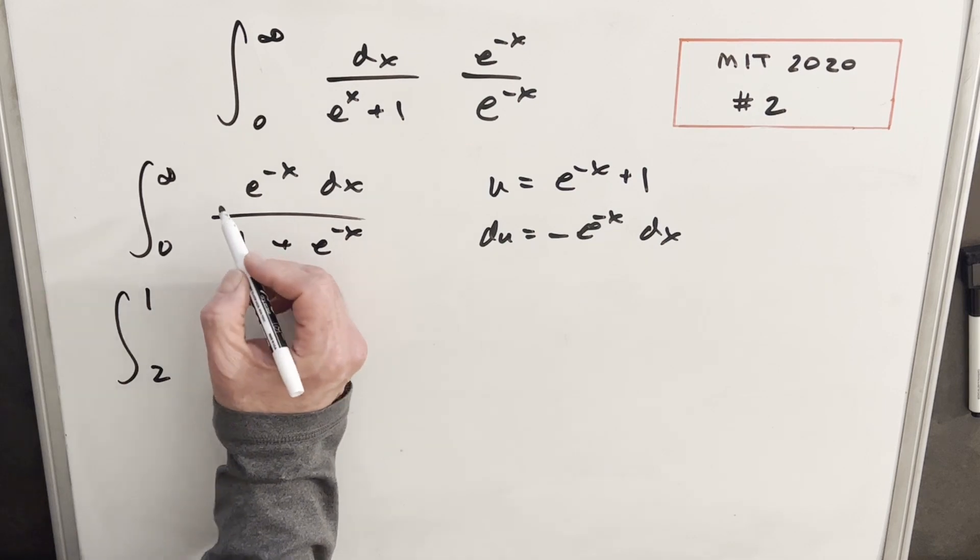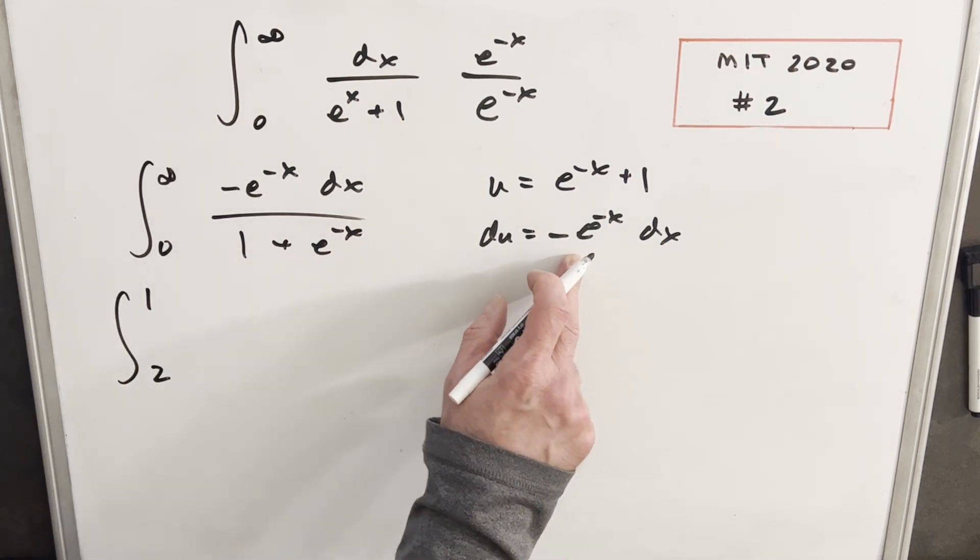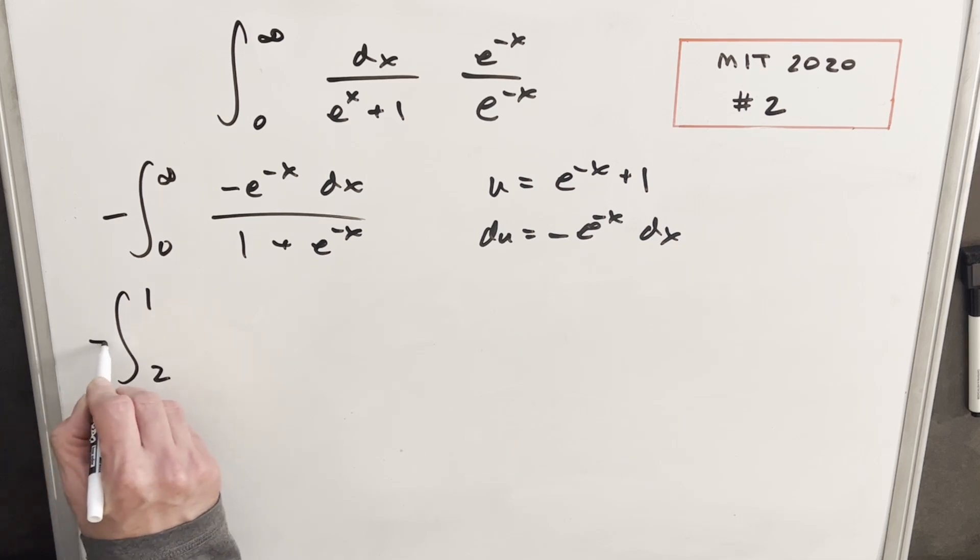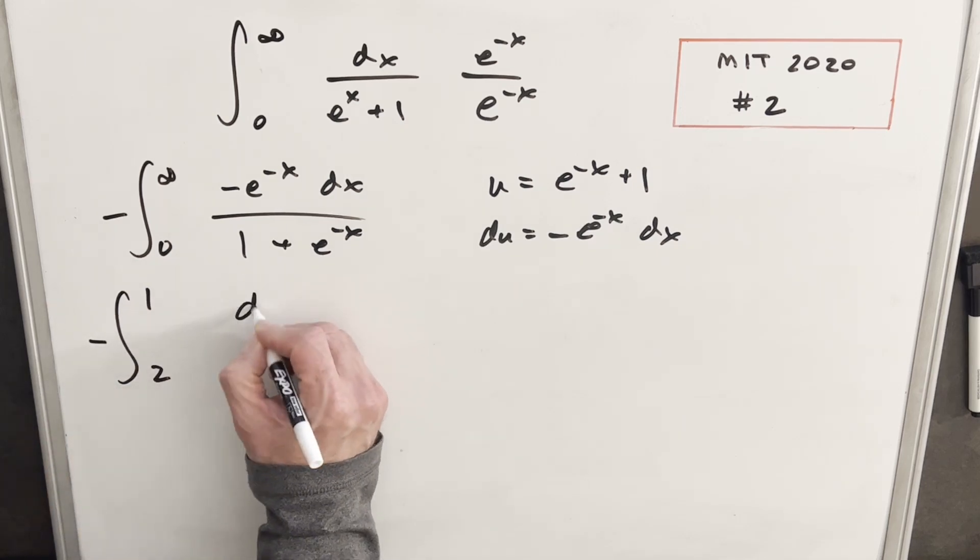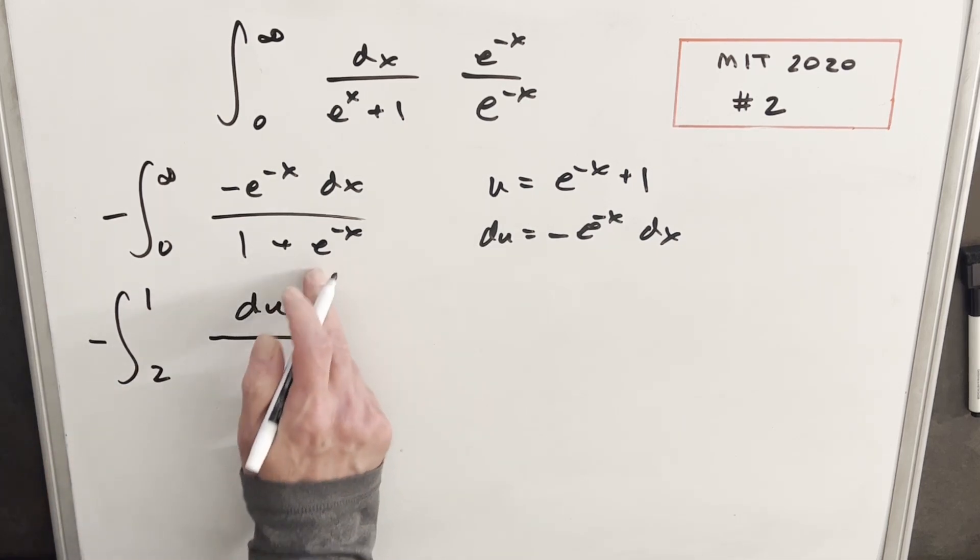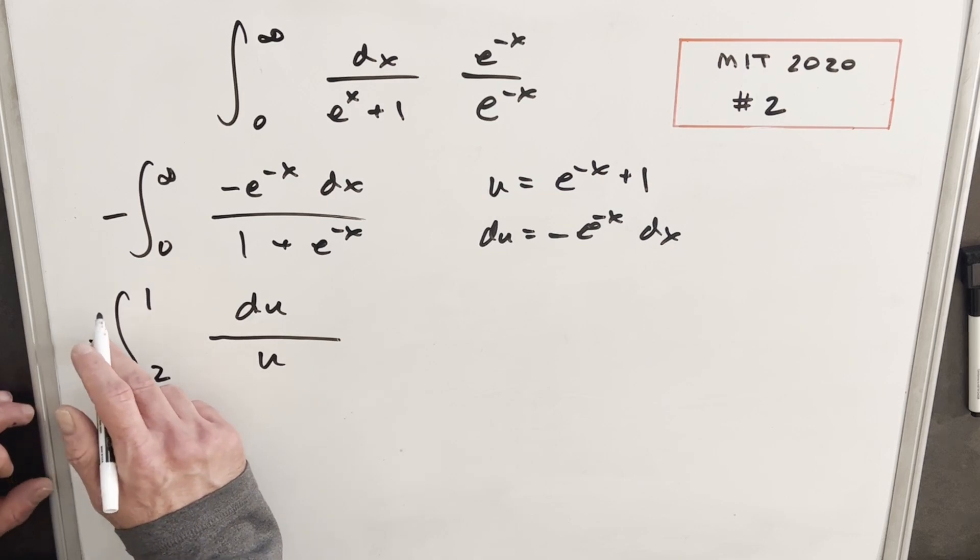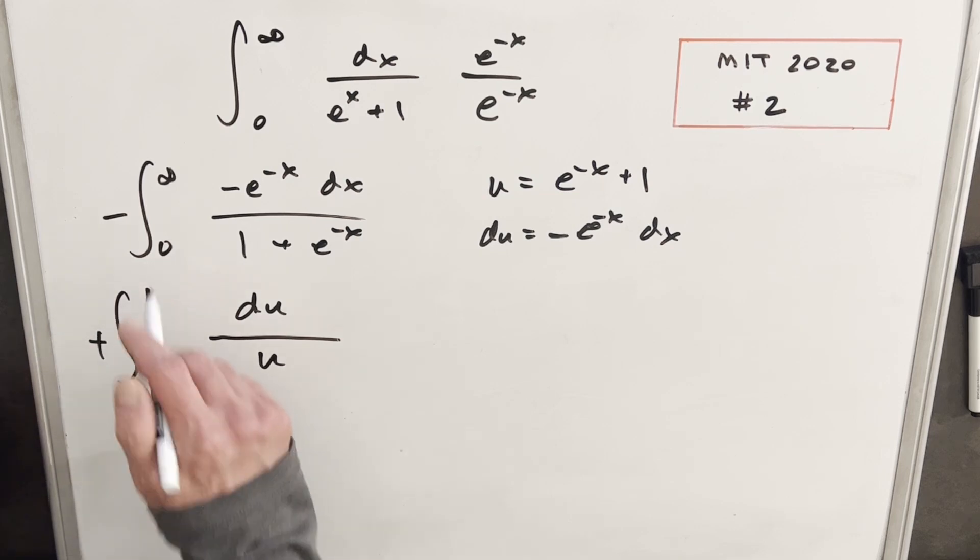And to make this substitution really clear, I'm just going to create this minus sign to match our du and bring a minus out front. So we'll bring that minus right there. We'll have du in the numerator. And our denominator is just going to be u. Then before we do anything, I'm going to use this minus sign to flip our bounds. So if I make this a plus, I can just flip this.